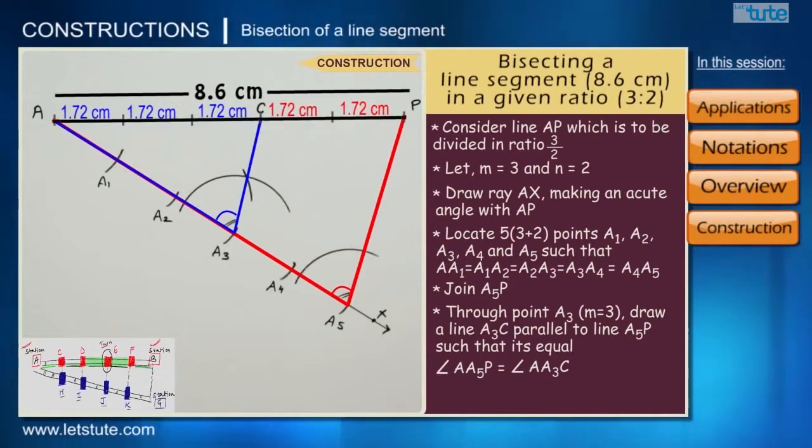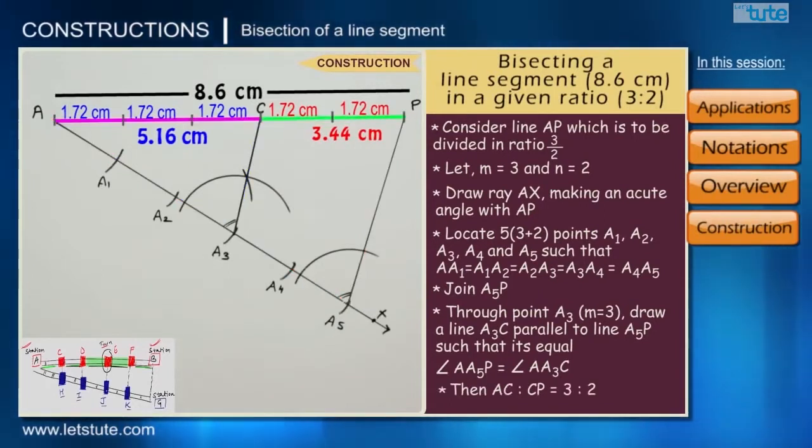Thus we have divided line segment AP of length 8.6 cm into smaller line segments AC and CP of length 5.16 cm and 3.44 cm respectively, which are in a ratio of 3 is to 2.